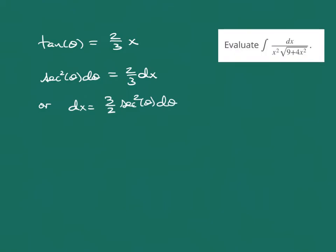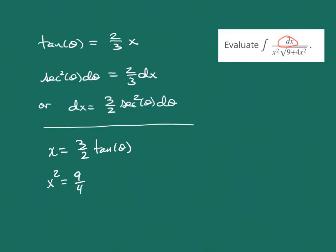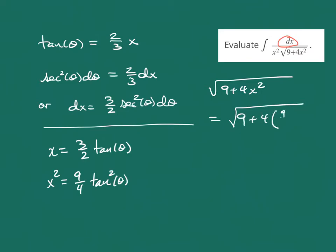Coming back to our original integral, we now have the expression for dx covered — it's 3/2 secant squared. Since 2/3 x equals tangent of theta, plain x equals 3/2 tangent of theta, and x squared equals 9/4 times tangent squared of theta. Underneath the radical, we have the square root of 9 plus 4x squared. When we make the substitution, we get 9 plus 4 times (9/4) tangent squared.